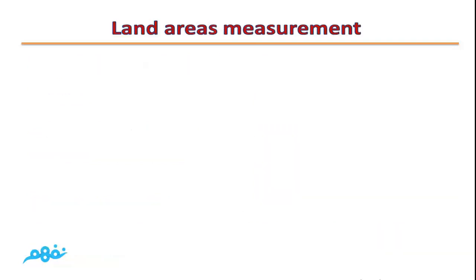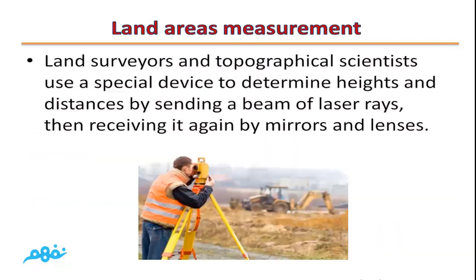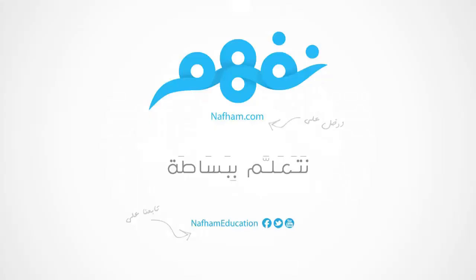Land surveyors and topographical scientists use a special device to determine heights and distances by sending a beam of laser rays and receiving it again using mirrors and lenses. This is the end of lesson 3.